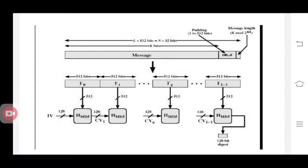So the first two steps: you have to add some padding bits as well as some 64 bits. If the message length is less than a multiple of 512 bits, you have to add some padding bits as well as the 64-bit length representation.